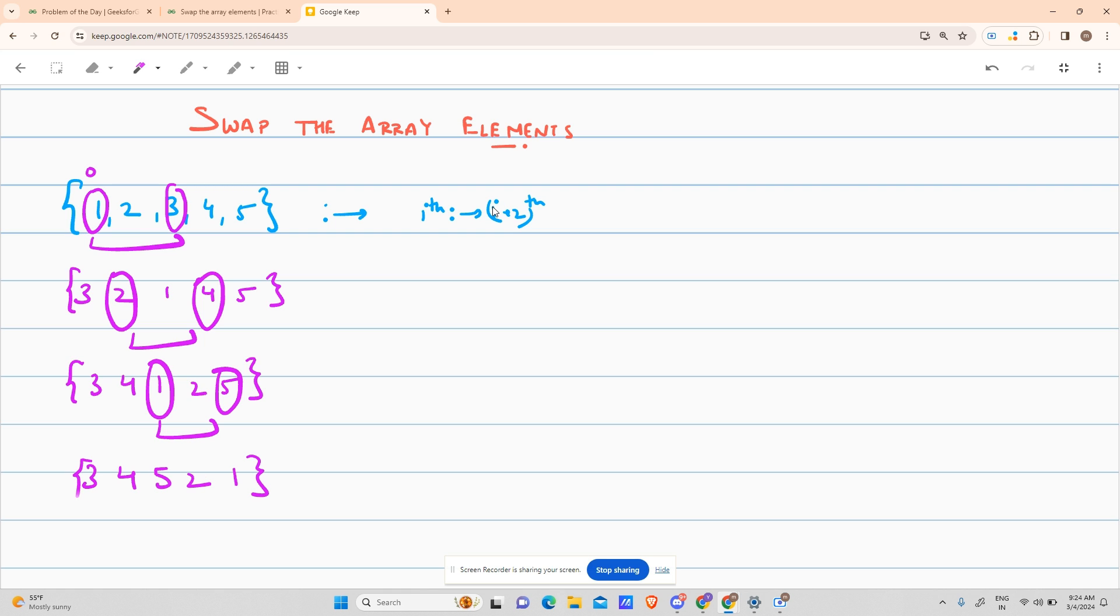You move here. Now i+2 doesn't exist, it is out of bounds, so you end your iteration here. And yes, this is your answer: 3, 4, 5, 2, 1.